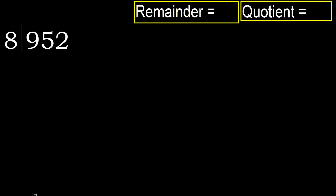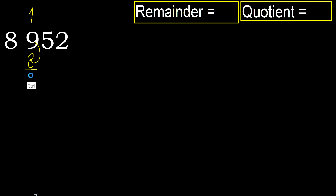952 divided by 8. Starting with 9: 9 is not less, so we work with 9. 8 multiplied by which number is nearest to 9 but not greater? 8 multiplied by 2 is 16, which is greater. Multiply by 1 is 8, which is not greater. Subtract: 9 minus 8 is 1.